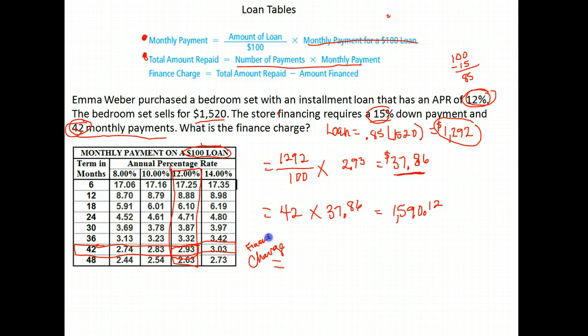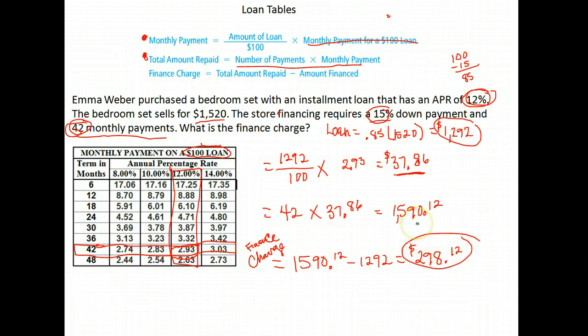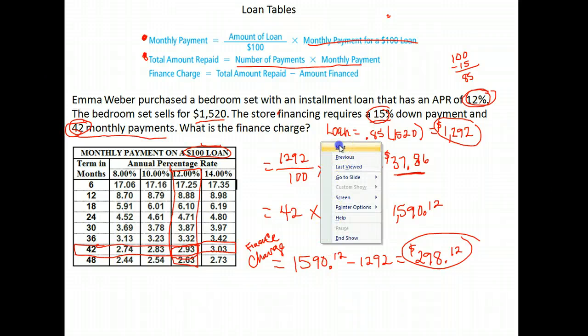The finance charge is the difference between what you actually borrowed and what you actually paid back. You paid total one thousand five hundred and ninety dollars and twelve cents, but you only borrowed one thousand two hundred and ninety-two dollars after your down payment. So the finance charge — the amount paid in interest — was two hundred and ninety-eight dollars and twelve cents.